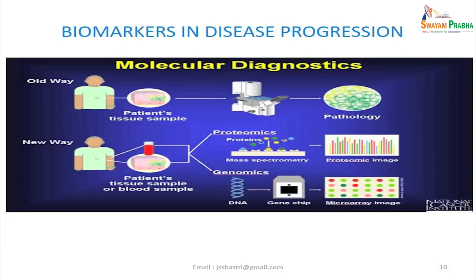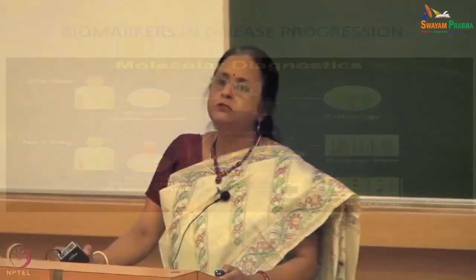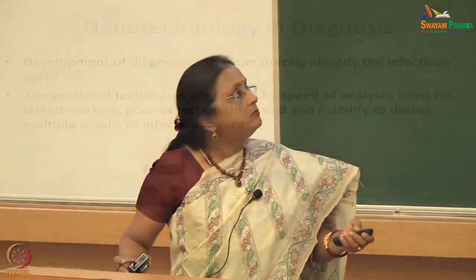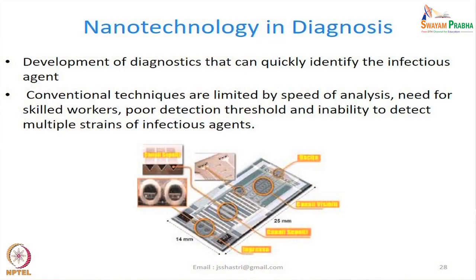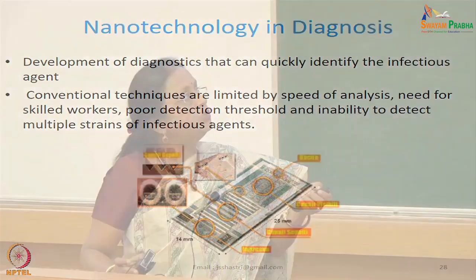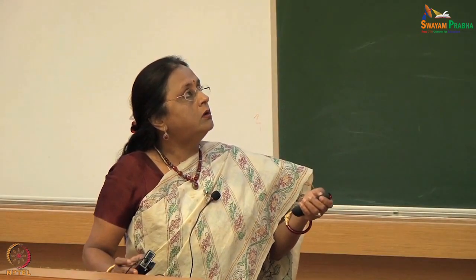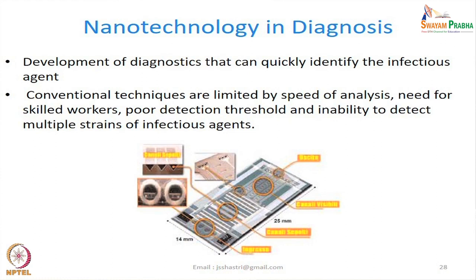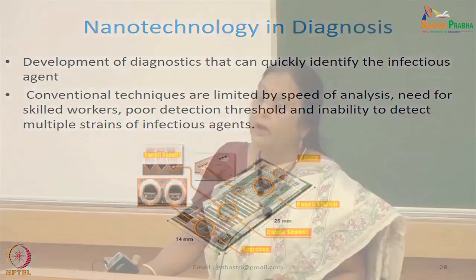Mass spectroscopy and genomics are going to take time. In molecular diagnosis we give reports by the end of the day when samples arrive at 9 am, but we want something much quicker and faster. Nanotechnology holds a lot of promise in diagnosis of infectious diseases — it can quickly identify the infectious agent to determine which is a severe case. Quarantine of patients is important to prevent patient-to-patient spread. Conventional techniques are not very fast; we need skilled workers, and there is a poor detection threshold — HIV viral load testing requires at least 50 copies of the virus for a positive result.